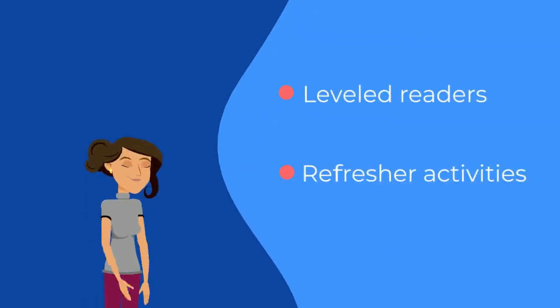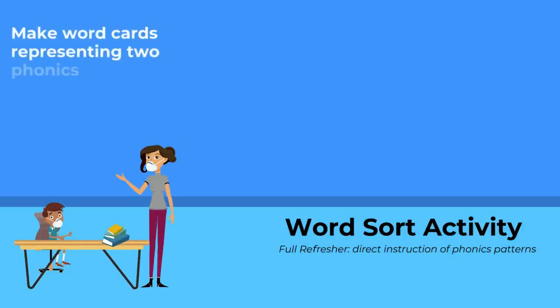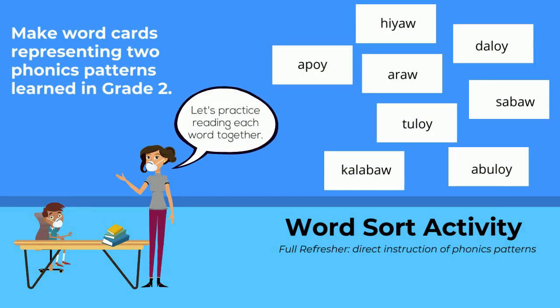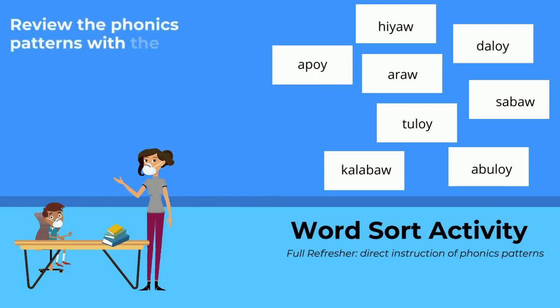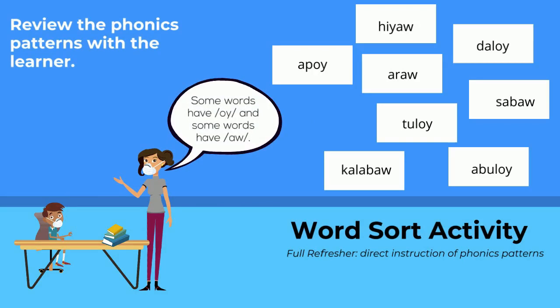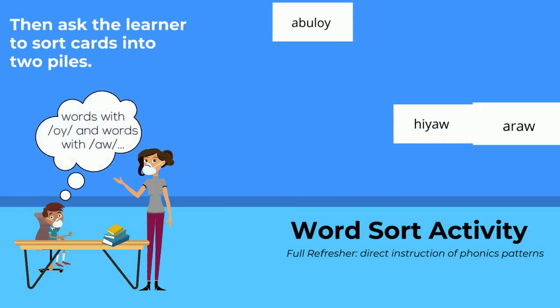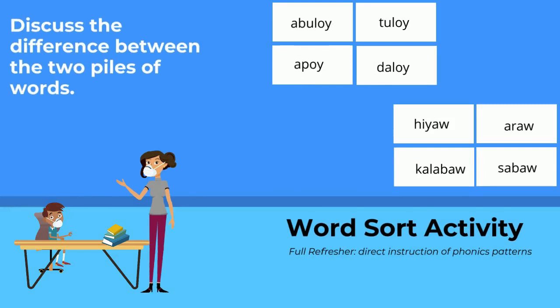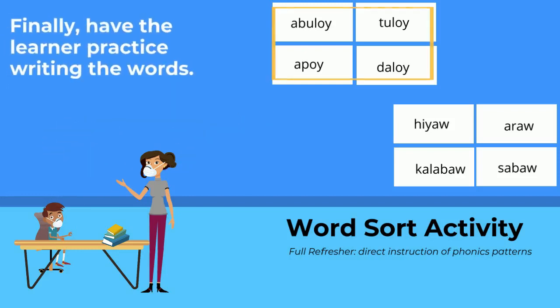Remember, there are also refresher activities you can use to support learners. Let's see an example that supports learners in need of a full refresher. For this activity, start by making word cards that represent two phonics patterns learned at the beginning of grade 2. Practice reading the words together with a child. Review the two phonics patterns with a learner, and then ask them to sort the words into two different piles. Discuss the difference between the two piles of words.